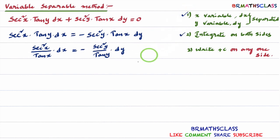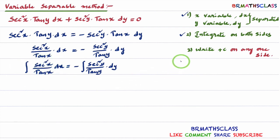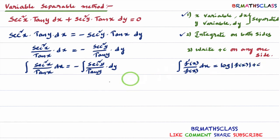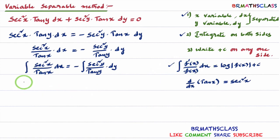In step 2, we integrate on both sides. Integral of secant square x divided by tan x into dx equals, with minus taken outside, integral of secant square y divided by tan y into dy. In the integration chapter, we learned this formula: integral of f' divided by f dx equals log mod f of x plus c. If the numerator is the derivative of the denominator, we can write the answer directly. The derivative of tan x is secant square x, and the derivative of tan y with respect to y is secant square y.